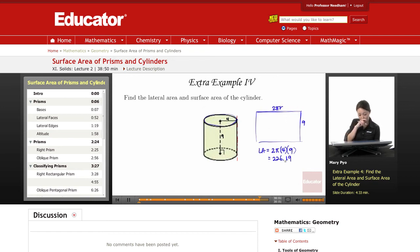That would be the lateral area. Now you can probably just leave it in pi if you can. So 2 times 4 times 9, that's 2 times 4 is 8, times 9 is 72. So you can leave it as 72 pi units squared.